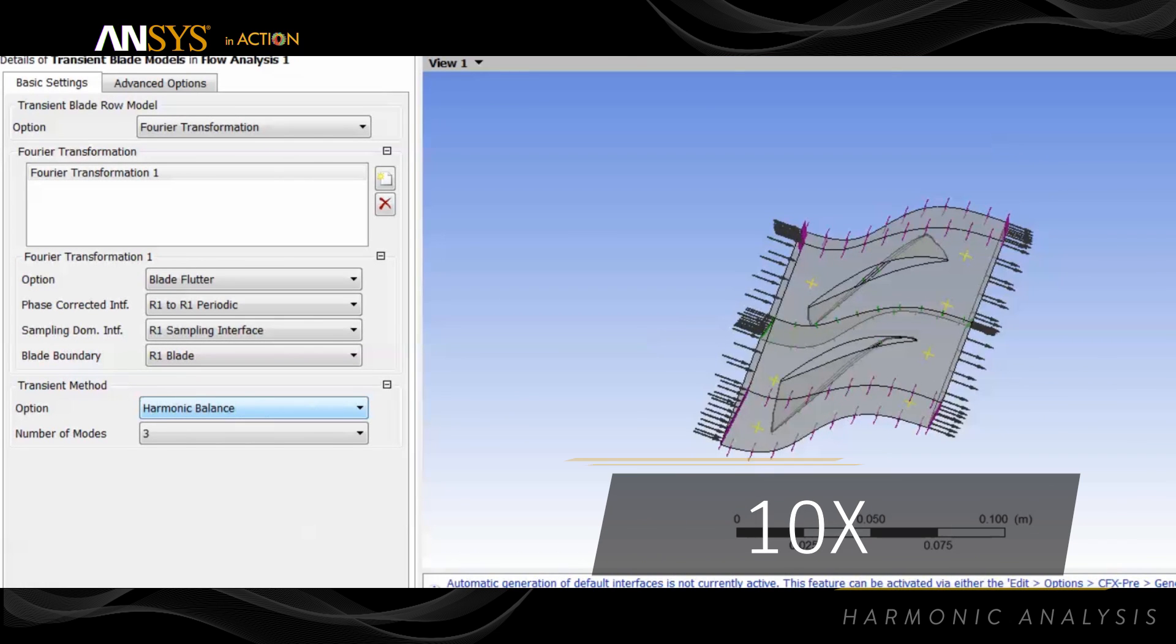Harmonic analysis will speed up the solution of the transient periodic turbomachinery flow by 10 to 100 times over standard time advancement methods.